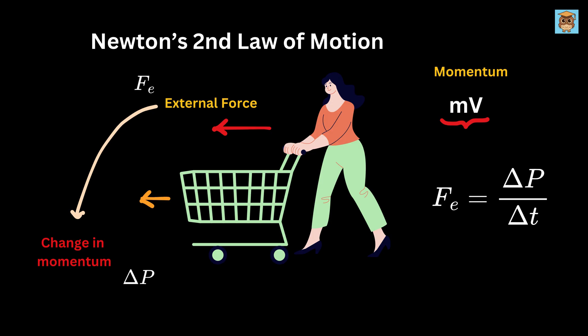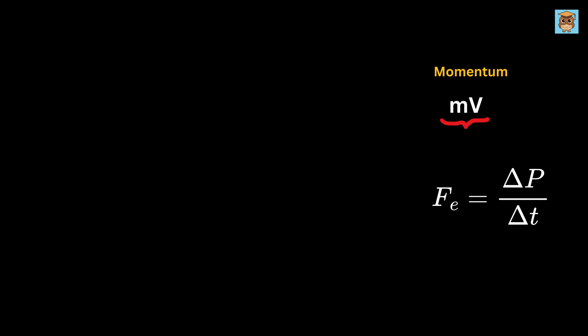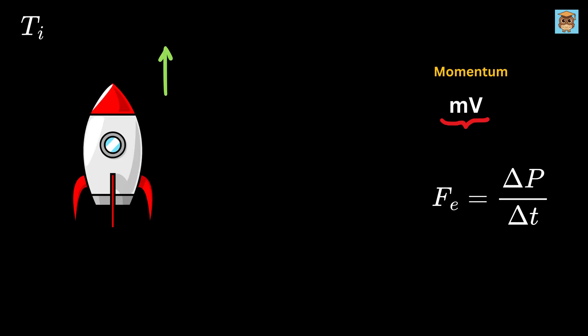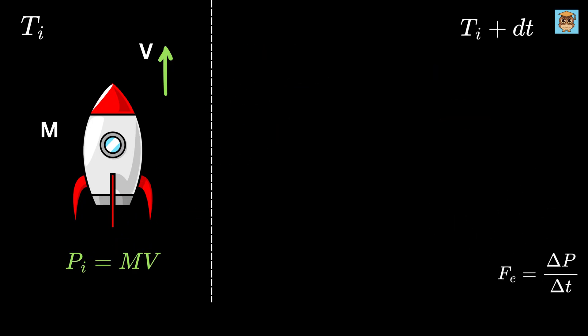Now here comes the real magic. Imagine our rocket moving upward at some initial time Ti. Suppose it has a certain mass M and it's moving at a speed v, so the rocket's momentum right now, or its initial momentum Pi, is M times v. Now after a very small time interval dt, the rocket ejects some fuel from the back.